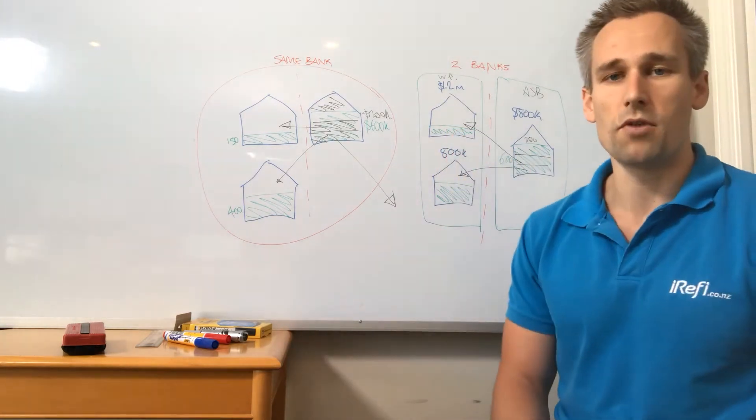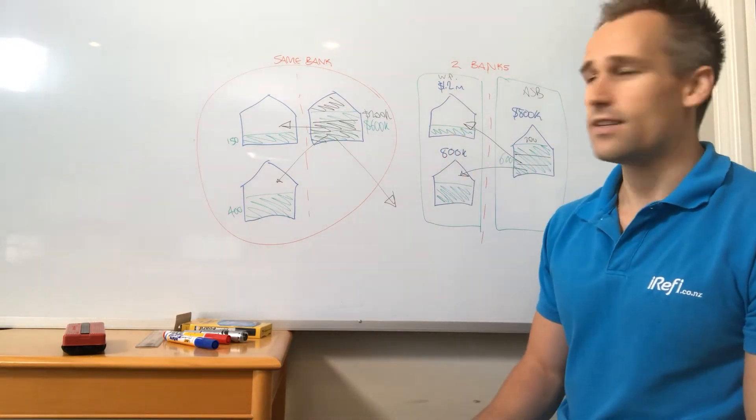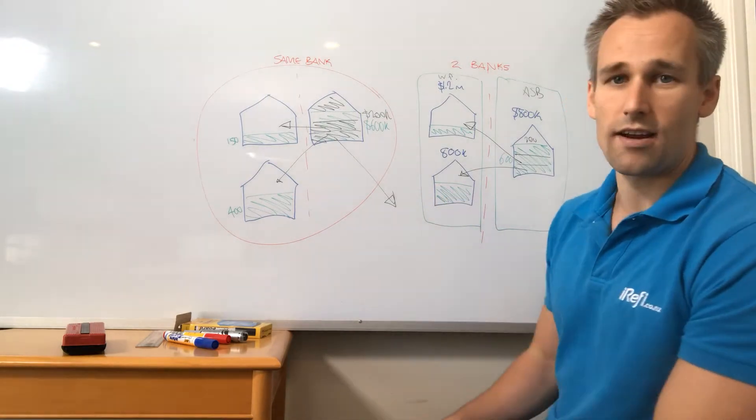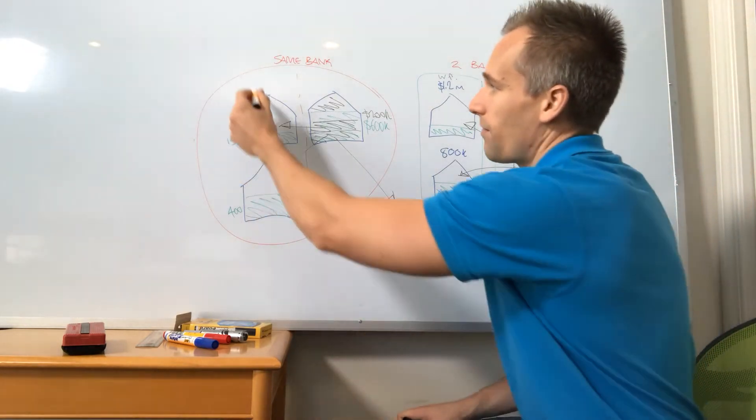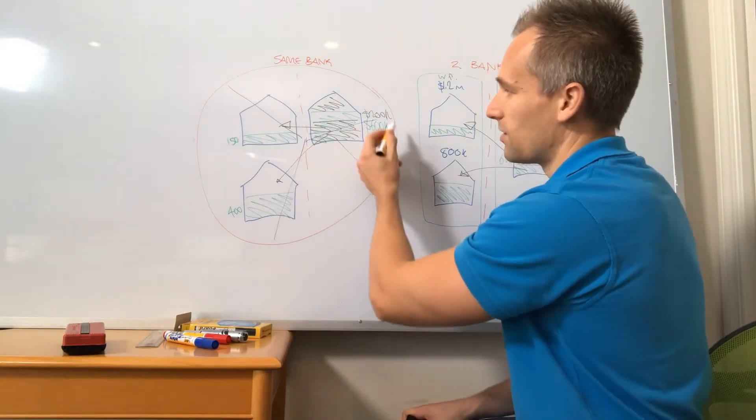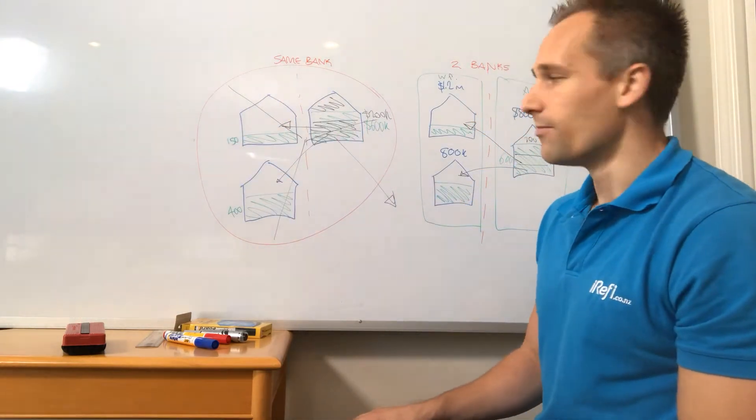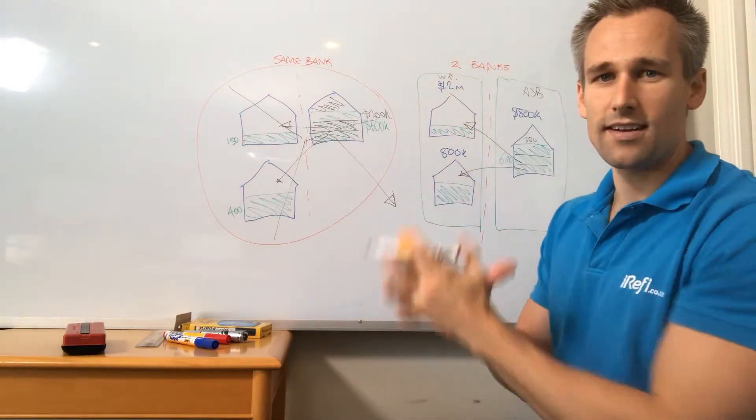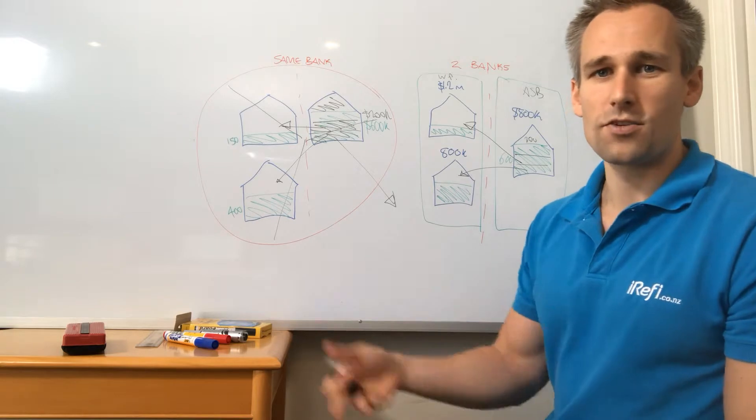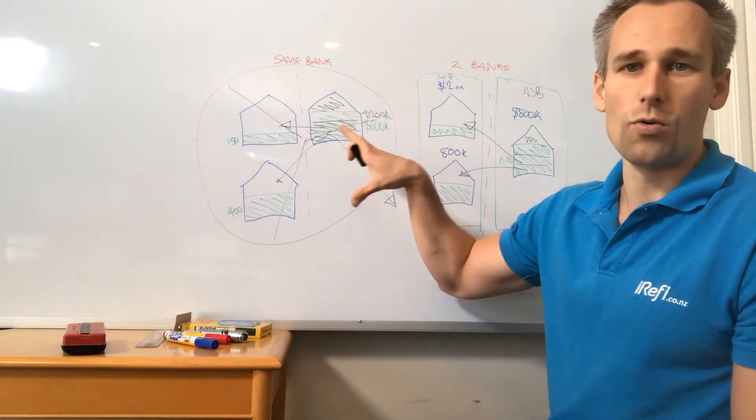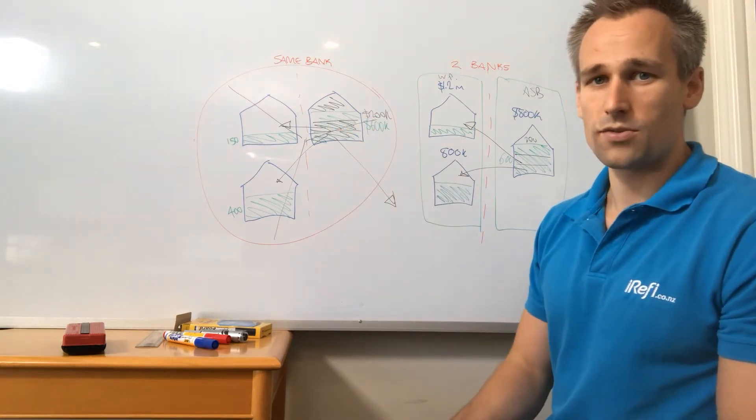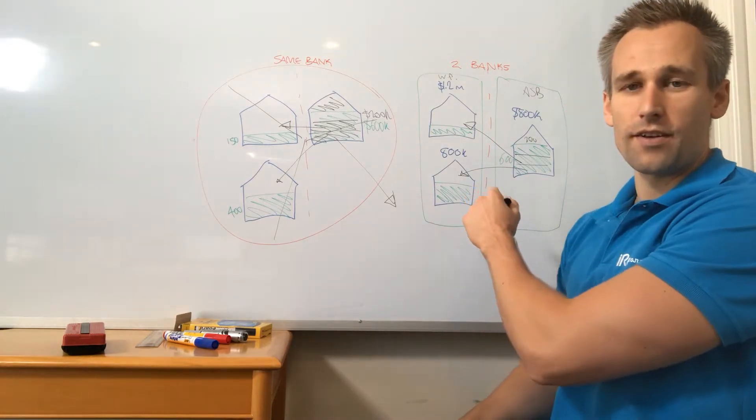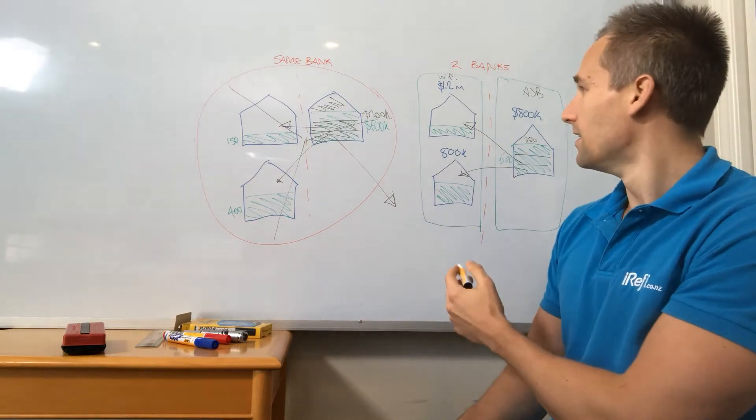What we're helping a lot of people do at the moment is separate securities and remove this cross-collateralization. Because when you have everything at one bank, what they do is they just treat it like a big pie—they take all of your debt and all of your assets, combine it together. And then when you're trying to make financial decisions, selling or buying, they're looking at your whole situation. Whereas really, you want to structure it so that you're giving yourself the advantage of having lots of different future options.